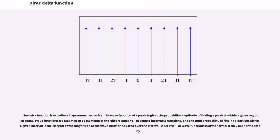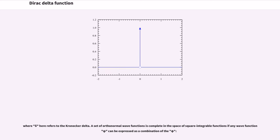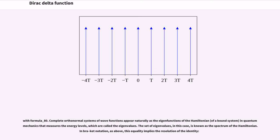The delta function is expedient in quantum mechanics. The wave function of a particle gives the probability amplitude of finding a particle within a given region of space. Wave functions are assumed to be elements of the Hilbert space L² of square integrable functions, and the total probability of finding a particle within an interval is the integral of the magnitude squared of the wave function over that interval. A set of wave functions φ is orthonormal if they are normalized, where delta here refers to the Kronecker delta. A set of orthonormal wave functions is complete if any wave function ψ can be expressed as a combination of the φ. Complete orthonormal systems of wave functions appear naturally as the eigenfunctions of the Hamiltonian of a bound system, measuring the energy levels — the eigenvalues — and the set of eigenvalues is known as the spectrum of the Hamiltonian. This equality implies the resolution of the identity.